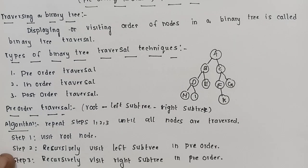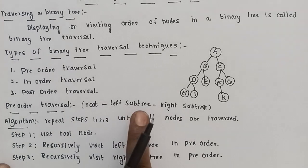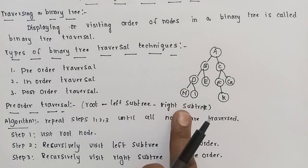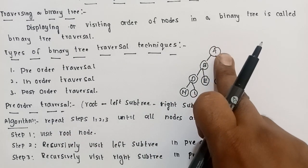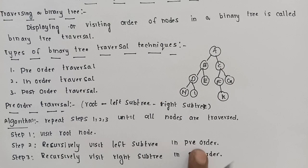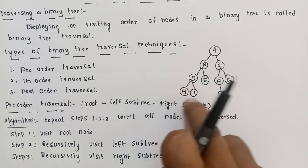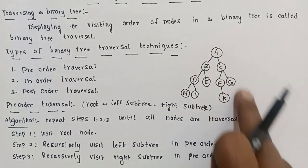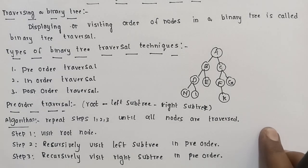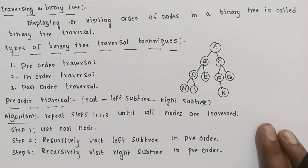Pre-order traversal visits the root node first, then the left subtree, and then the right subtree. First visit the root node, then recursively visit the left subtree in pre-order, then recursively traverse the right subtree in pre-order. This is the pre-order traversal technique.